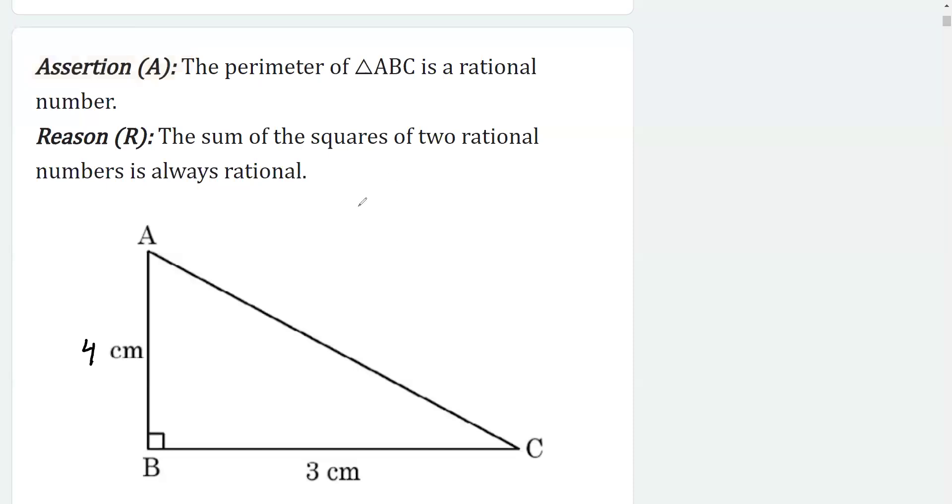If I have to get the perimeter, I'll say it should be AB plus the length of BC plus AC. We do not know the length of AC, but since it is a right angle triangle, we can apply Pythagorean theorem to get the length of AC.